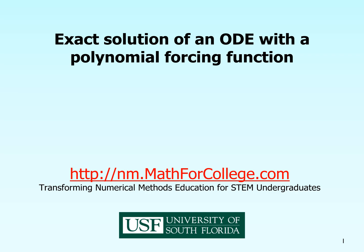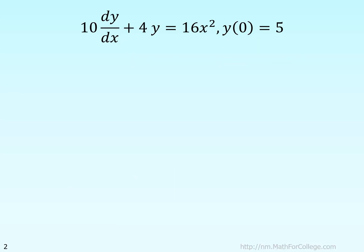In this segment, we'll talk about finding an exact solution of an ordinary differential equation which has a polynomial forcing function. We're going to take this example — a first-order ordinary differential equation with only first derivative terms. Looking at the right-hand side, which is 16x squared, that is the forcing function — it is a polynomial. We are given the initial condition y(0) equal to 5, and we need to figure out what y is as a function of x.